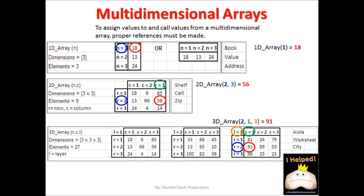What we need to keep in mind whenever we're working with multidimensional arrays is that it's important to assign values and call values from multidimensional arrays using proper references. In this case, I have a value of 18. Perhaps I want to assign it to element 1 in a one-dimensional array, so I refer to element 1 in the array and assign it a value. If I want to do the same thing in a two-dimensional array — for example, the number 56 — I have to make the reference. Here I have what I refer to as rows and columns, so I have to go to row 2 and column 3.